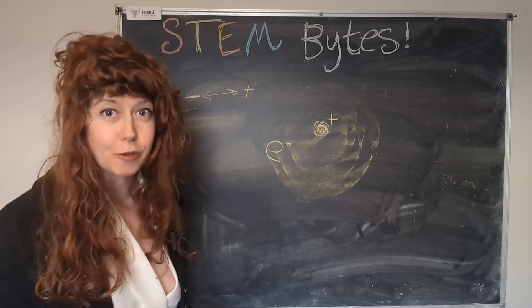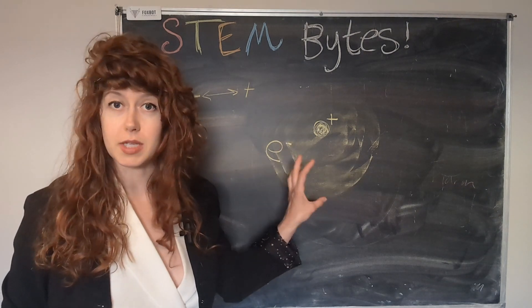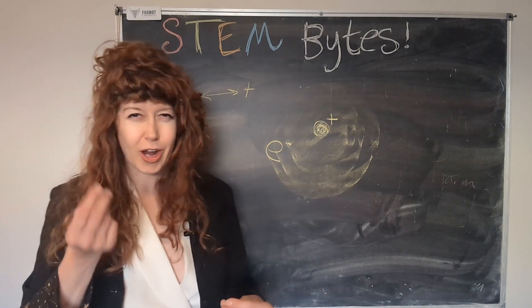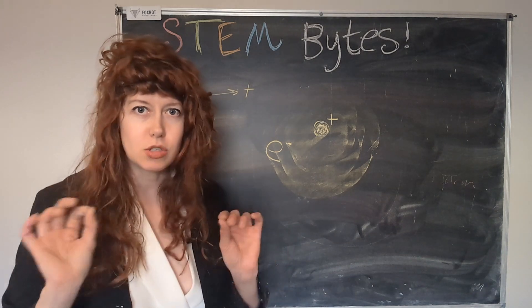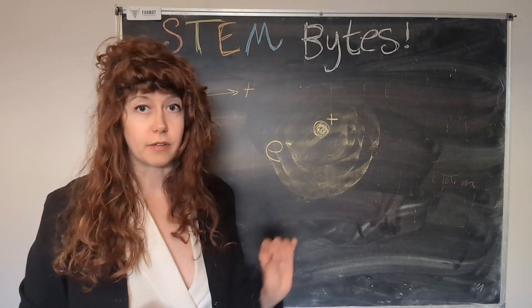So remember my dear friends, charge is a fundamental property of matter, just like mass. The electron is our kind of base unit. It is the smallest amount of charge that we know of. And electrons are negatively charged.